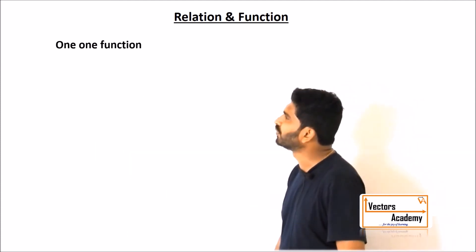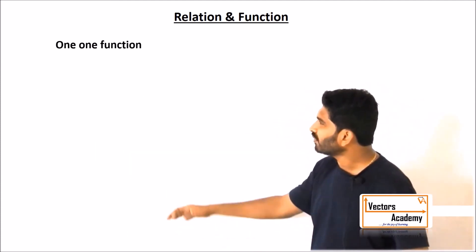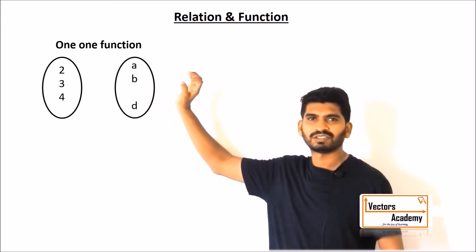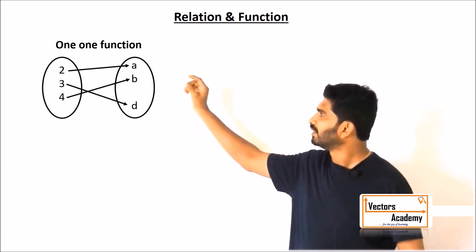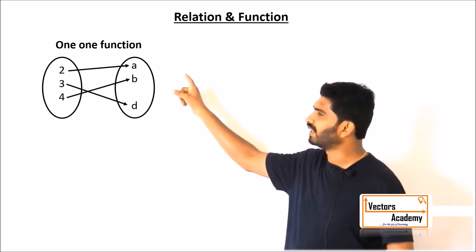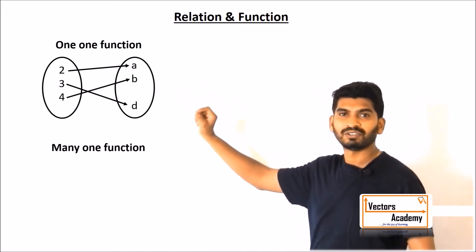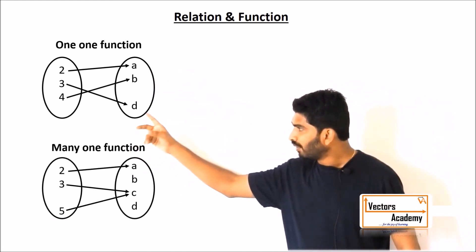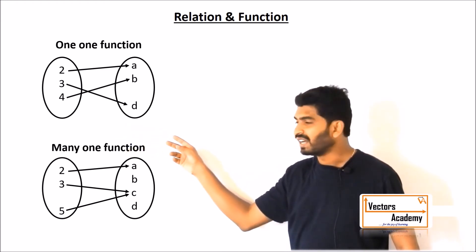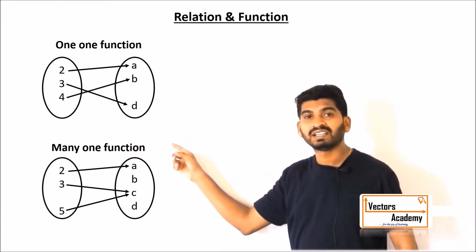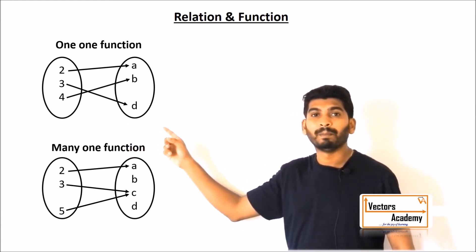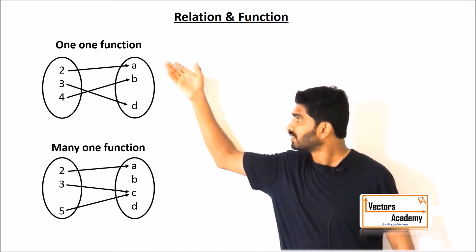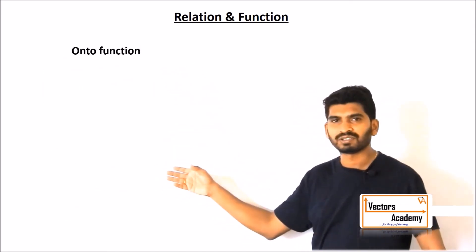Now let's look at different types of functions. The first is a one-one function, where each element in the domain is connected to exactly one element in the range. In contrast, when more than one element in the domain is connected to a single element in the range, that is called a many-one function.